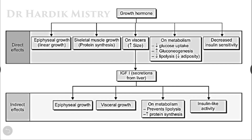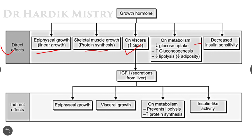The direct effects of growth hormone: it causes epiphyseal growth or linear growth of the body. Due to its effect on protein synthesis, it causes skeletal muscle growth. On viscera, there will be an increase in size. On metabolism, it decreases glucose uptake so glucose level is high in the blood — having a diabetogenic effect causing hyperglycemia. It decreases gluconeogenesis, decreases lipolysis, and decreases adiposity, releasing free fatty acids for energy. It also decreases insulin sensitivity.